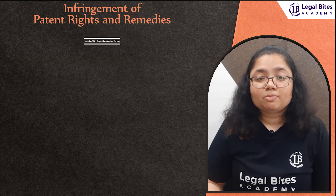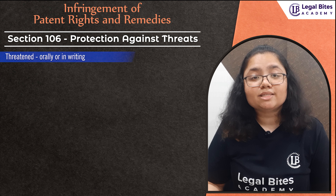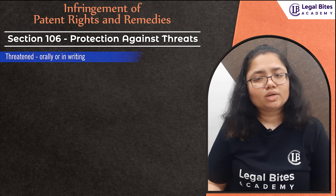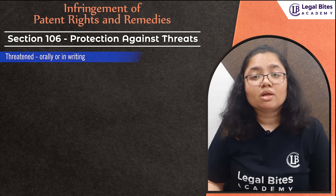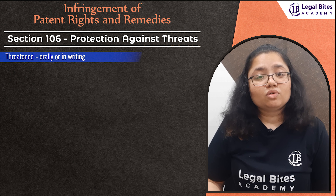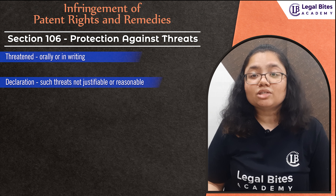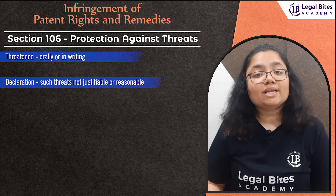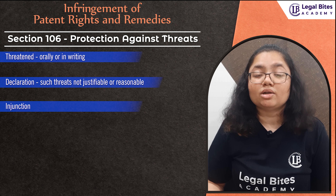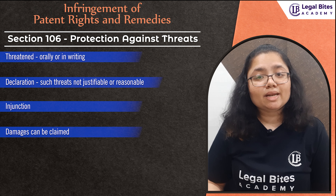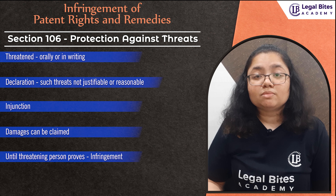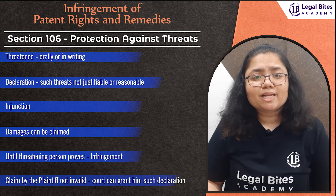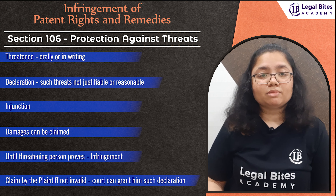The Act also provides protection in case a person is threatened by someone interested in such patent rights — orally, in writing, or in any other manner — that legal proceedings would be instituted against them. In such a case, the person threatened can go to court under Section 106 for a declaration that such threats are not justifiable or reasonable, and obtain an injunction to stop them immediately. Damages can also be claimed if any loss is suffered due to the threats. Unless the threatening person proves that the plaintiff's act would lead to infringement and such claims are not invalid, the court can grant the declaration.